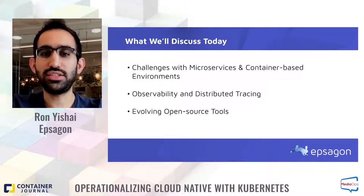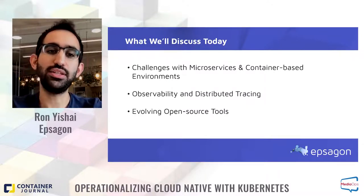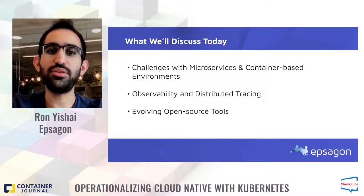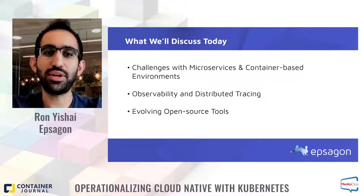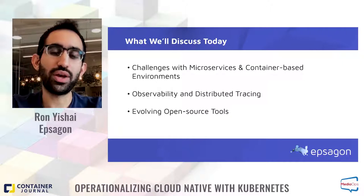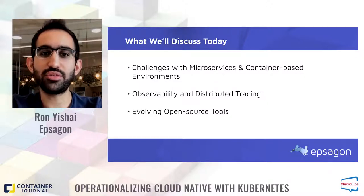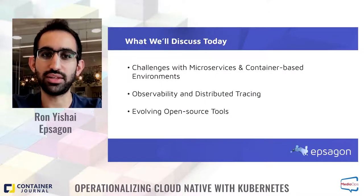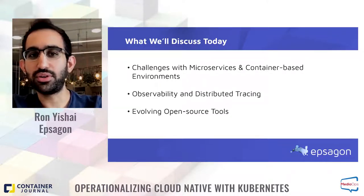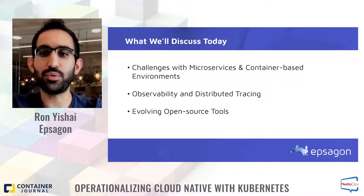Today we will talk about the challenges with monitoring microservices and container-based environments like Kubernetes. As many of you have begun to adopt more and more microservices containers, the standard metrics that once worked well in Monolith are leaving gaps in your observability strategy. We will then see how distributed tracing fits into that, and also talk about some of the evolving open source tools that can help.